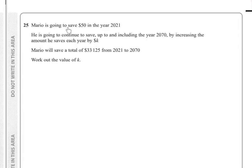Problem 25: Mario is going to save $50 in the year 2021. He's going to continue to save up to and including the year 2070 by increasing the amount he saves each year by $k. Mario will save a total of $33,125 from 2021 to 2070. Work out the value of k.